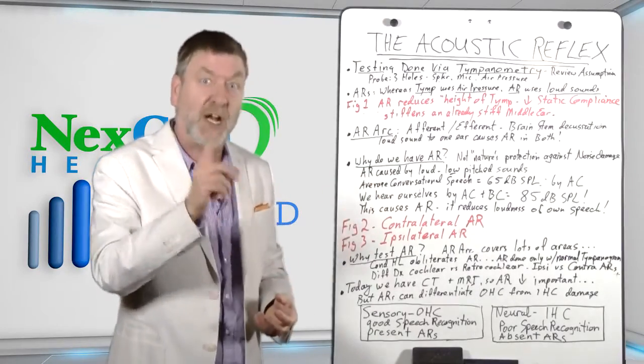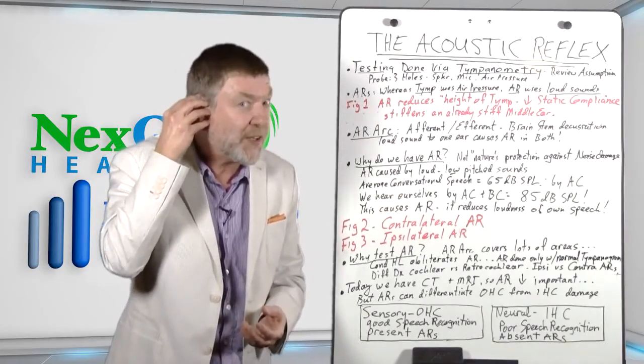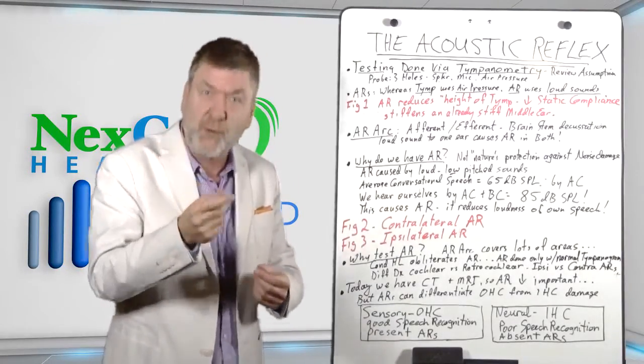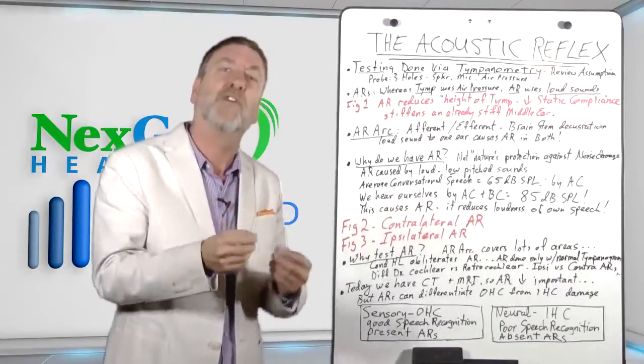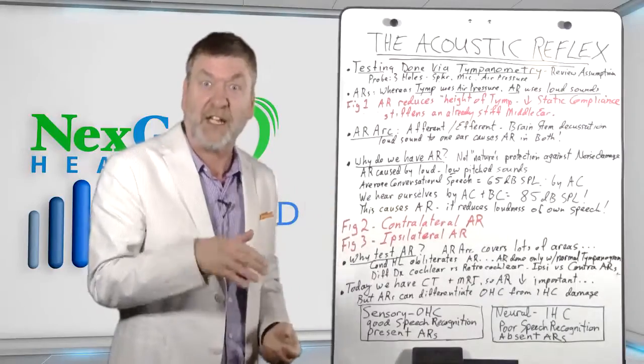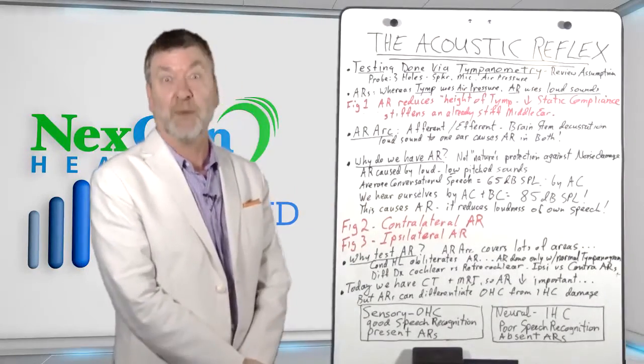We can then safely assume that the air pressure on the other side of the eardrum is also at regular room air pressure. However, if negative air pressure is required in the closed sealed ear canal in order to render the best tympanogram, we can then assume that negative air pressure also exists on the medial side of the TM, thus indicating an early stage of otitis media. That, however, was tympanometry.